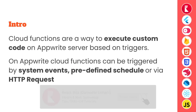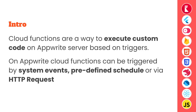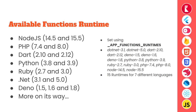So what is a Cloud Function? Cloud Functions are a way to execute custom code or run custom functions on the AppWrite server based on certain triggers. AppWrite Cloud Functions can be triggered by system events, a predefined schedule, or via HTTP request from our SDKs or even the command line. What are the different available function runtimes in AppWrite?